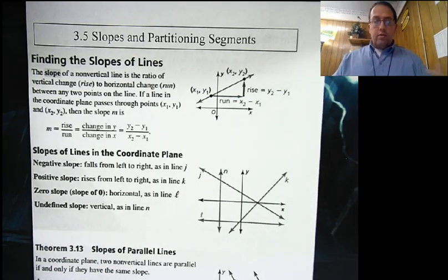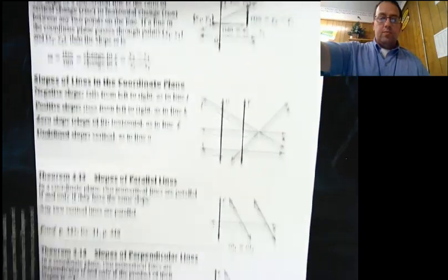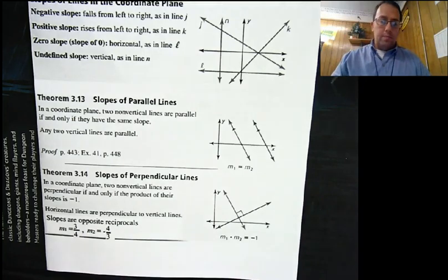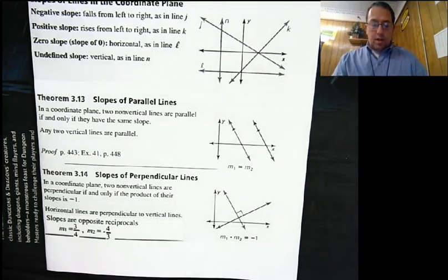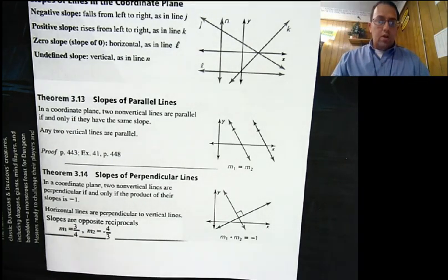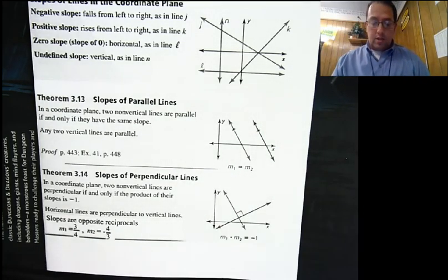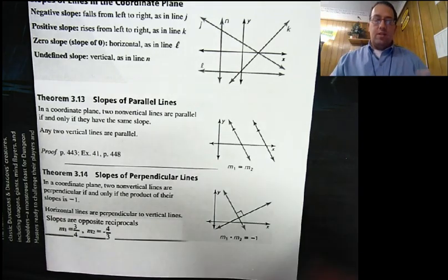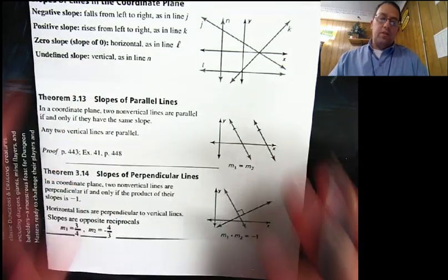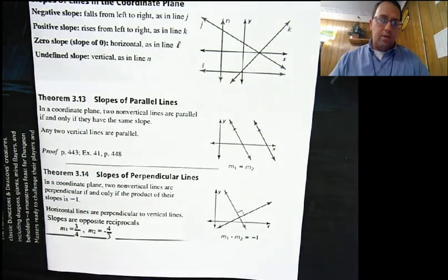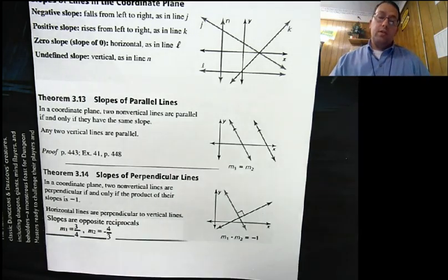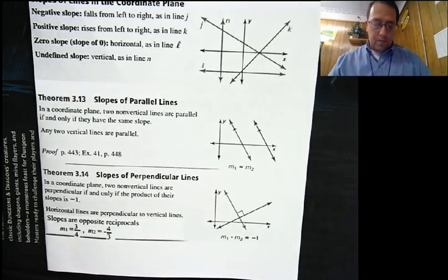Now there are two special cases we can do with slope: parallel lines and perpendicular lines. Parallel lines, if they are non-vertical, will have the same slope. The slope of one is equal to the slope of the other. This isn't true for vertical lines, because vertical lines have undefined slope. But any two vertical lines will always be parallel, because they both have undefined slopes.